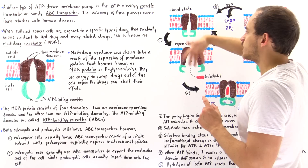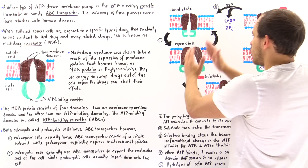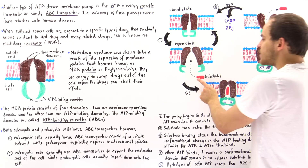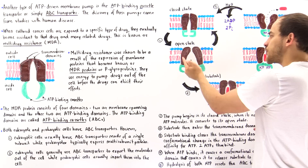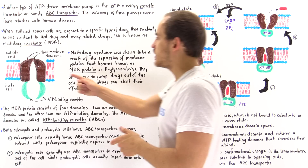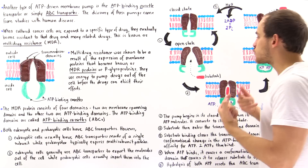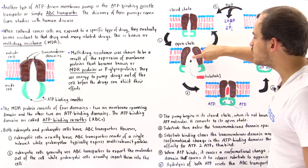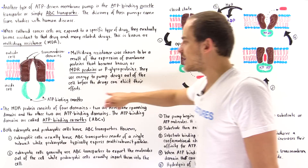The pump interconverts between closed and open states relatively quickly. Only when it is open can substrate molecules, shown here in red, actually enter the central cavity of the transmembrane domain. The two transmembrane domains create this internal cavity that can fit the substrate molecule. Once the substrate molecule enters this central cavity, that closes the two transmembrane domains.